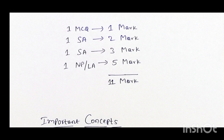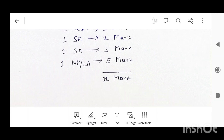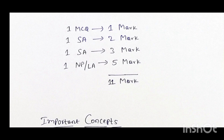As you already know about the blueprint analysis of the second year, I am concentrating on the first chapter, electric charges and fields. From this chapter you have an 11 mark contribution to your annual board exam. In that, you are going to get one MCQ question carrying one mark, and one two-mark question, which may be a definition type — that is called a short answer.